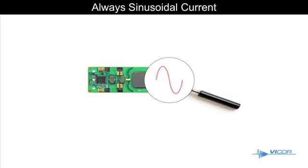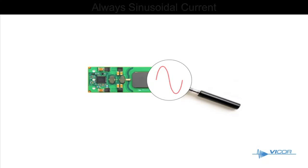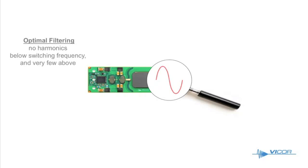The sinusoidal current flow within the converter enables key system benefits. First, the filter design is easy and cost effective as all of the filtering components can be sized for a switching frequency greater than one megahertz.